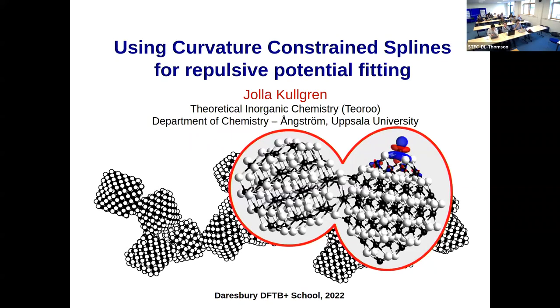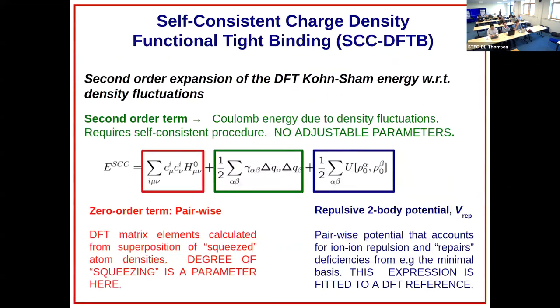Okay, so welcome to the second to last session. Today I will talk a little bit about a method to fit repulsive potentials within DFTB, a thing that we have given the name curvature constraint splines. I think the name will become rather obvious with time here.